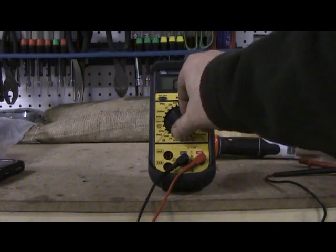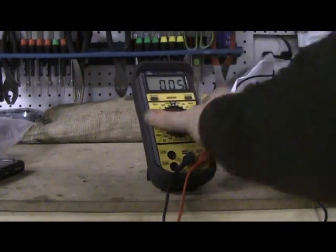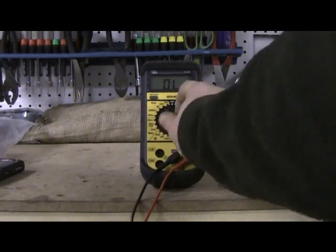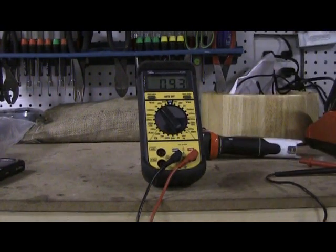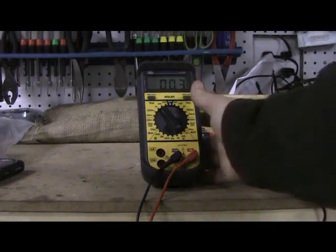And then the last area is going to be alternating current, and we'll set it on 200, since we're going to check an outlet that is 110, 120.